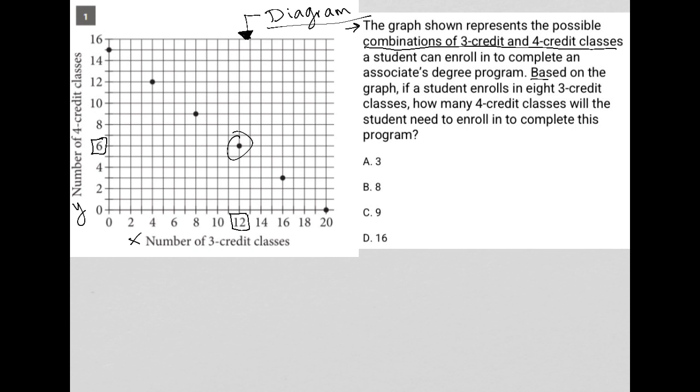Next sentence. Based on the graph, if a student enrolls in eight three-credit classes, so we'd be here, how many four-credit classes will the student need to enroll in to complete this program?